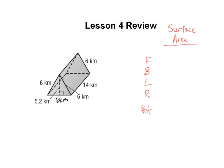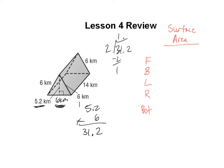The area of a triangle is base times height divided by two. Notice our triangle has a base of 6 and a height of 5.2. So let's do 5.2 times 6: six times two is 12, six times five is 30 plus one more is 31 — one decimal place. Now we divide by two: 31.2 divided by two gives us 15.6.